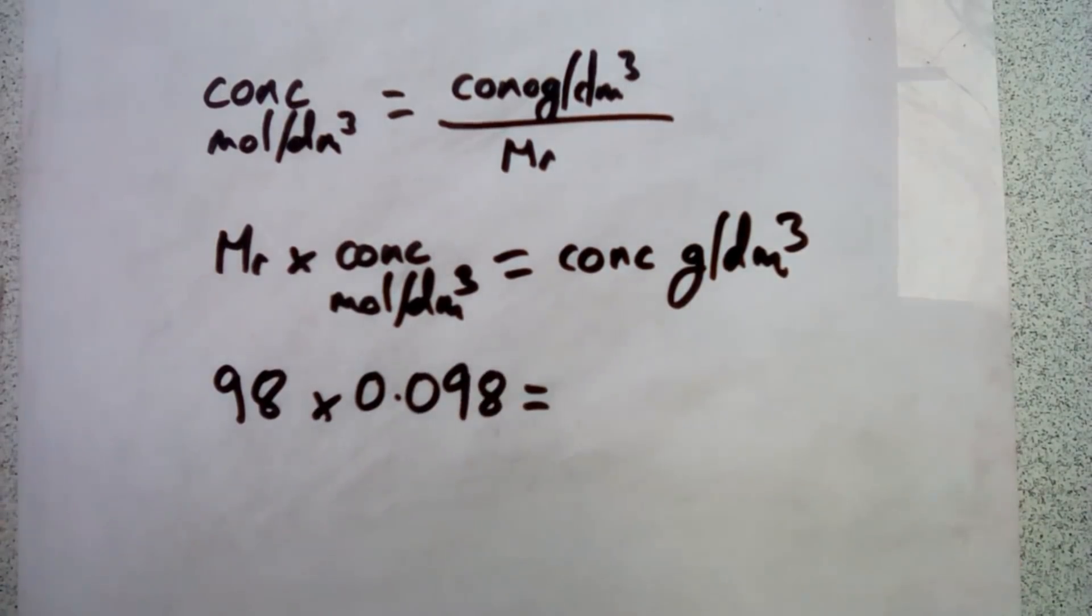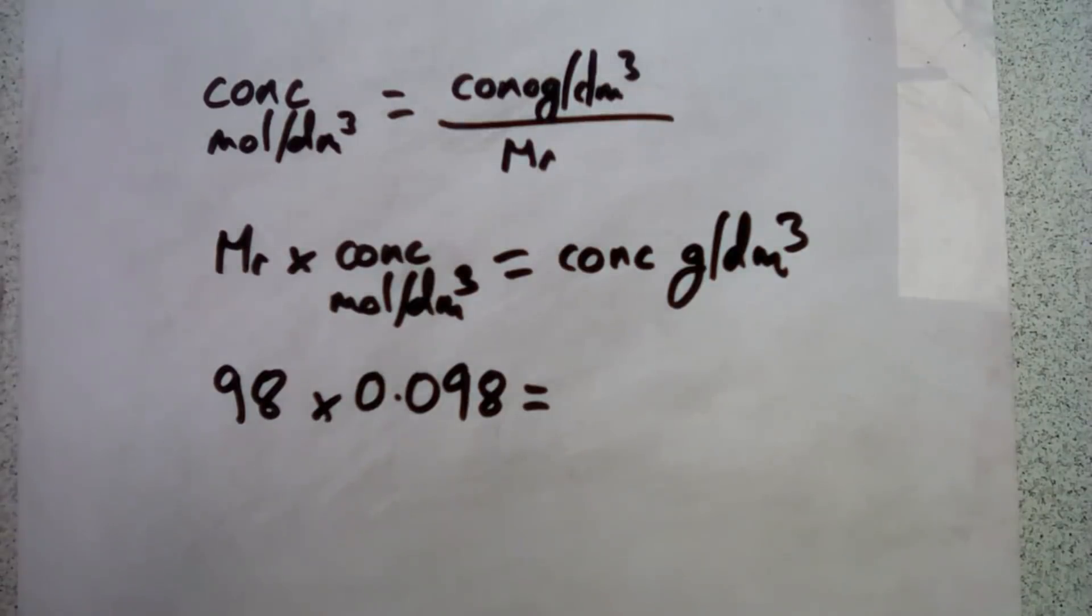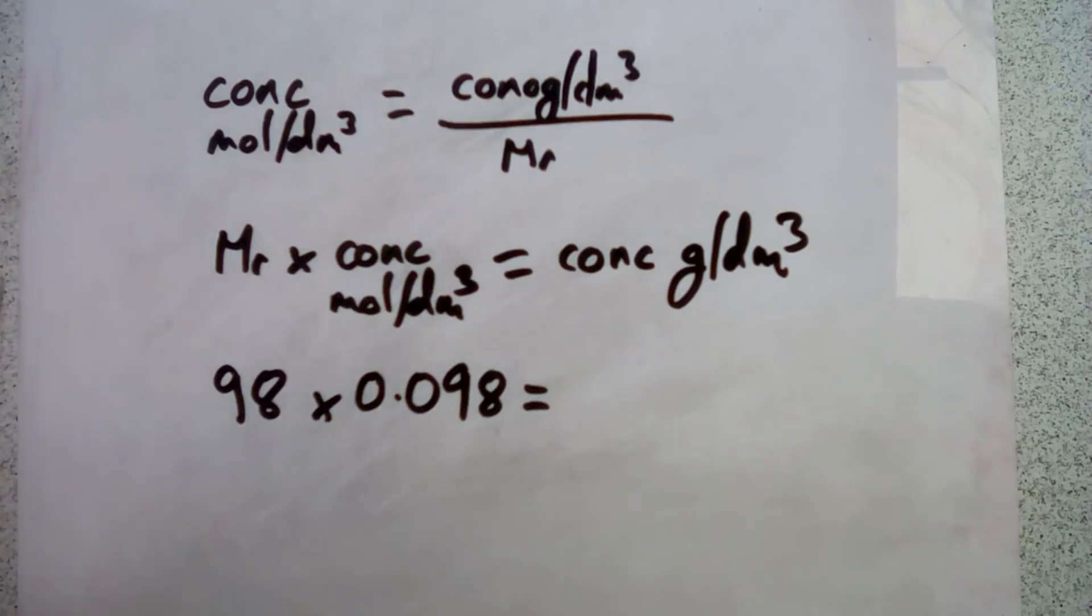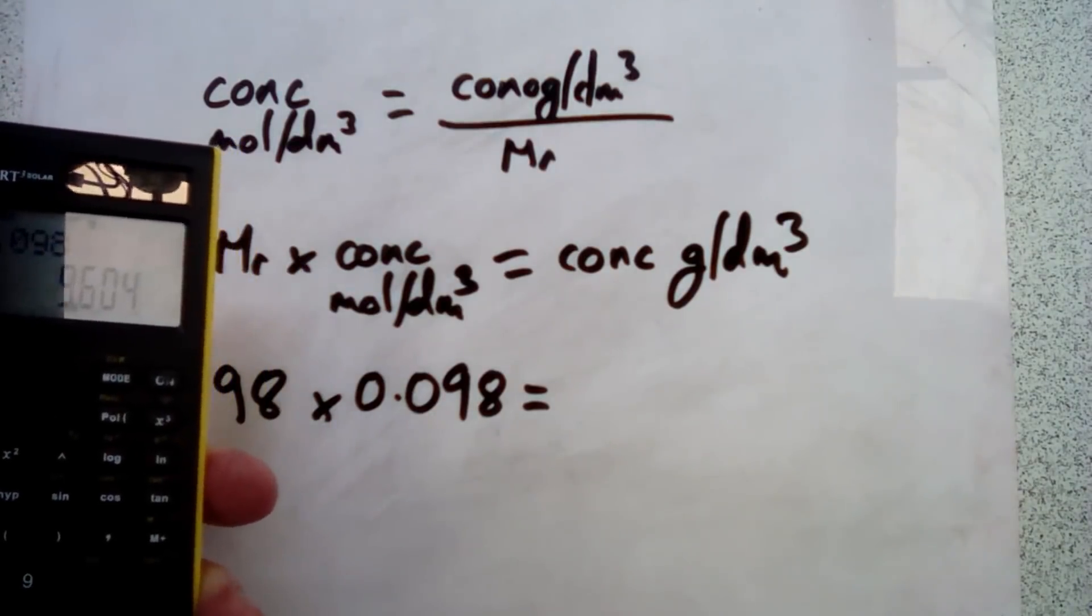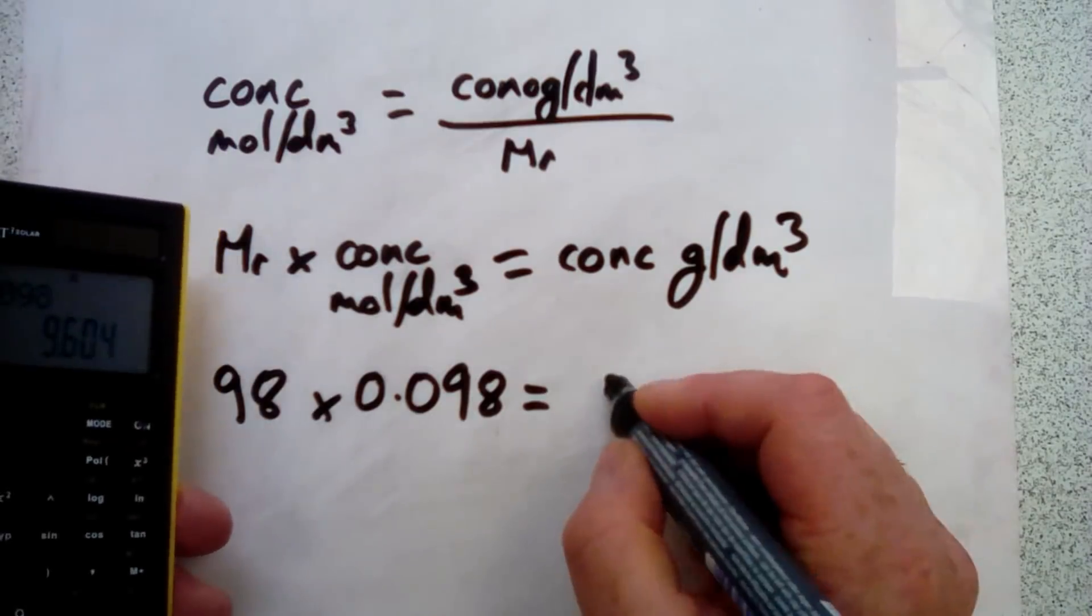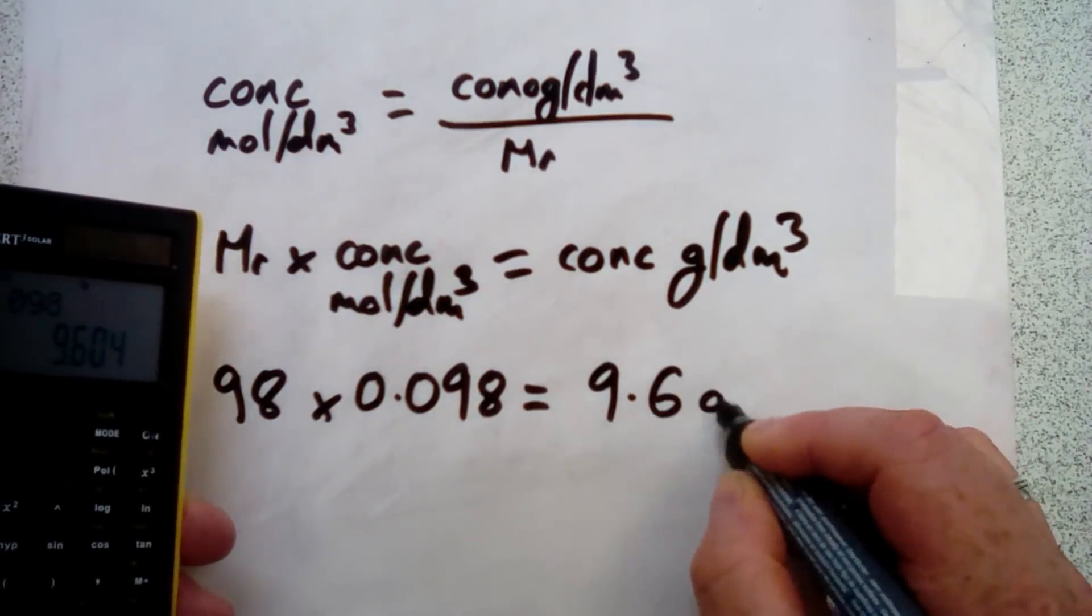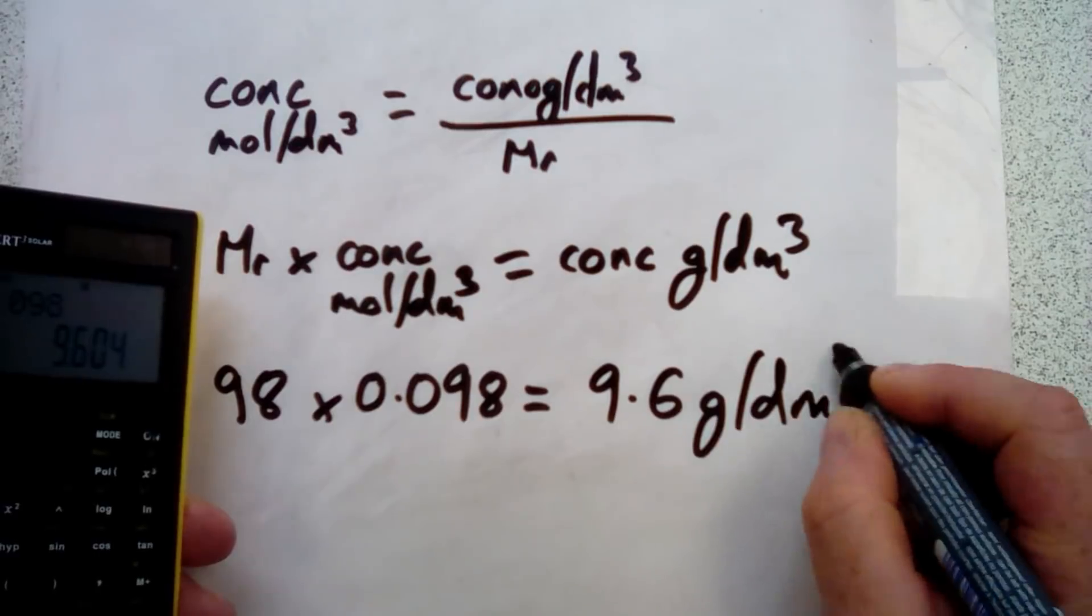We go back to our trusty calculator: 98 multiplied by 0.098 gives us an answer of 9.604 grams per decimeter cubed.